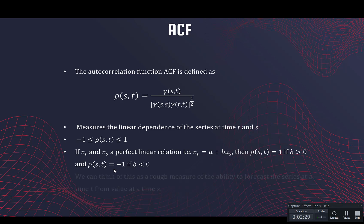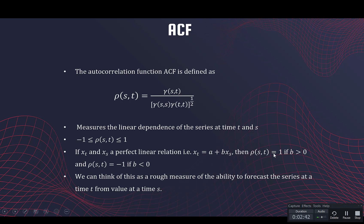You can think of this roughly as the capacity or ability to forecast the series at time point t from the value at time point s. If they're perfectly positively correlated, this equation will be roughly true, and if we know the value of the time series at, say, s equal to 10, we can predict the next value of the time series at the next time point.